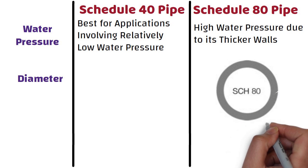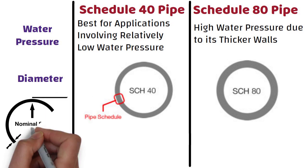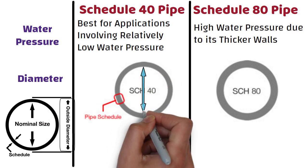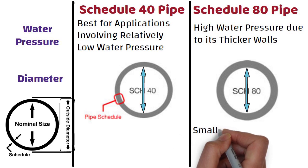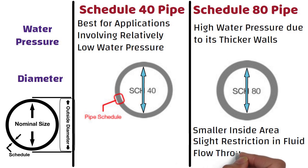Both schedule 80 and schedule 40 PVC pipe have the exact same outer diameter for the same nominal size — where nominal pipe size refers to the pipe's outer diameter measurement. The inner diameter is what differs between the two: schedule 80 PVC pipe has a smaller inside area than schedule 40 due to its thicker walls, which accounts for a slight restriction in fluid flow through the pipe.